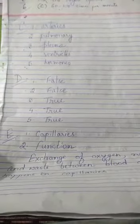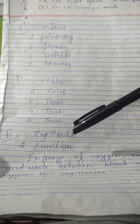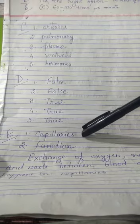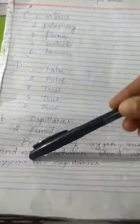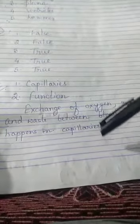Diagram based question. They have told to identify the diagram as well as write the function. So the diagram is, you can write blood vessels, or better answer will be capillaries. And second, they have asked for the function of capillaries. So function of capillaries is exchange of oxygen, nutrients, and waste between blood and tissues happens in capillaries.